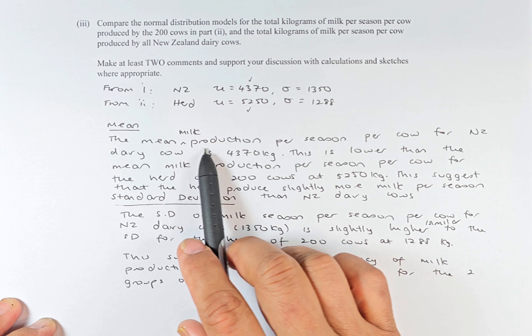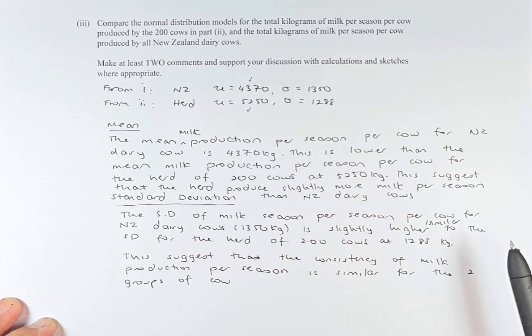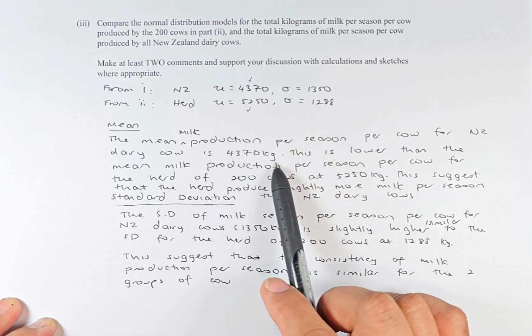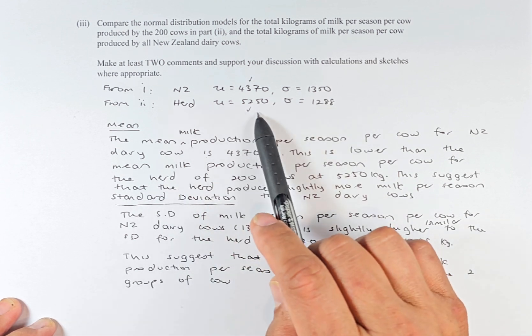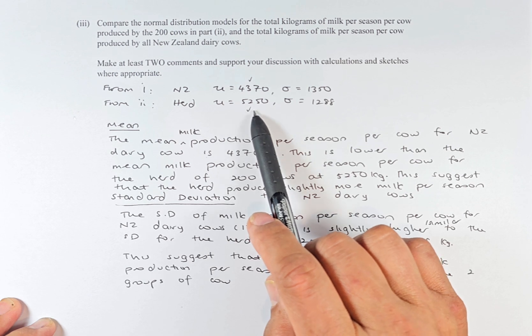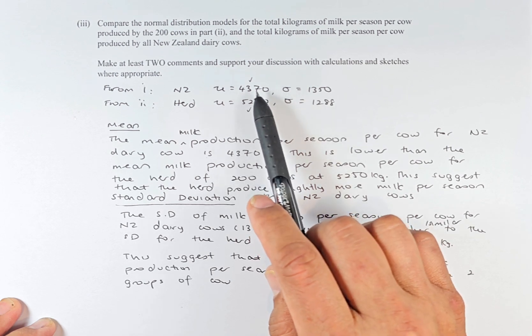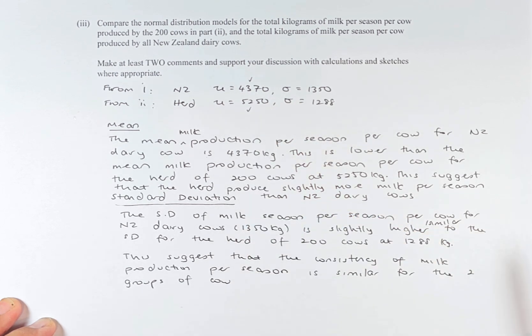The mean milk production per season per cow for New Zealand cows is 4370 kg. This is lower than the mean production per season per cow for the herd of 200 cows at 5250. This means that the herd produces slightly more milk per season than the New Zealand dairy cow. In fact, it is going to be slightly less than 1000 kg difference. So that is how you answer that one point in your exam.